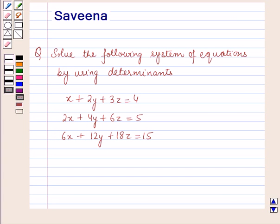Hello and welcome to the session. In this session we will discuss a question which says: Solve the following system of equations by using determinants. The equations are: x plus 2y plus 3z equals 4, 2x plus 4y plus 6z equals 5, and 6x plus 12y plus 18z equals 15.